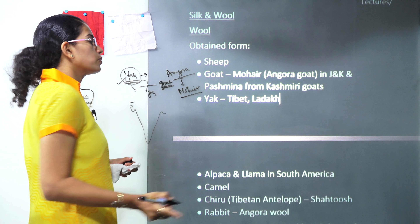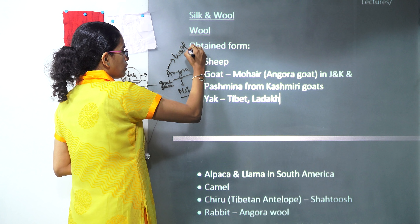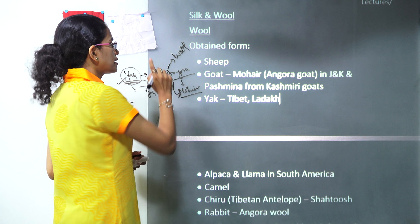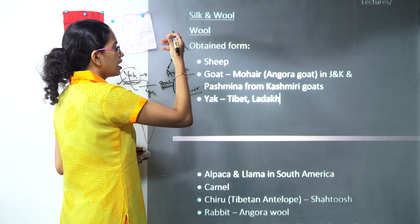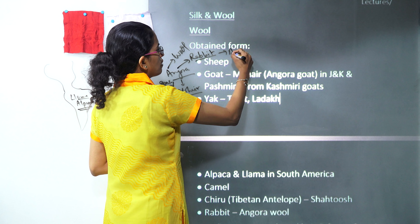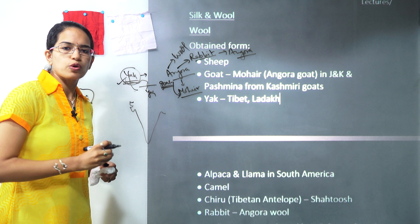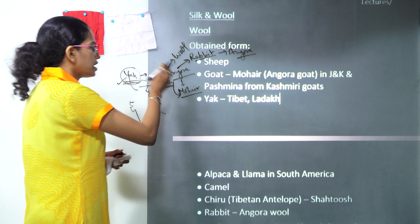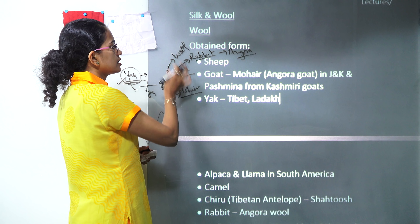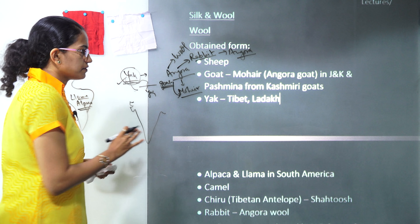Very important: you also have Angora wool. Wool from the Angora goat is known as mohair, but wool from the Angora rabbit is known as Angora wool. Remember the difference. Angora is the name of both a goat and a rabbit. Angora goat gives the wool known as mohair; Angora rabbit gives the wool known as Angora.